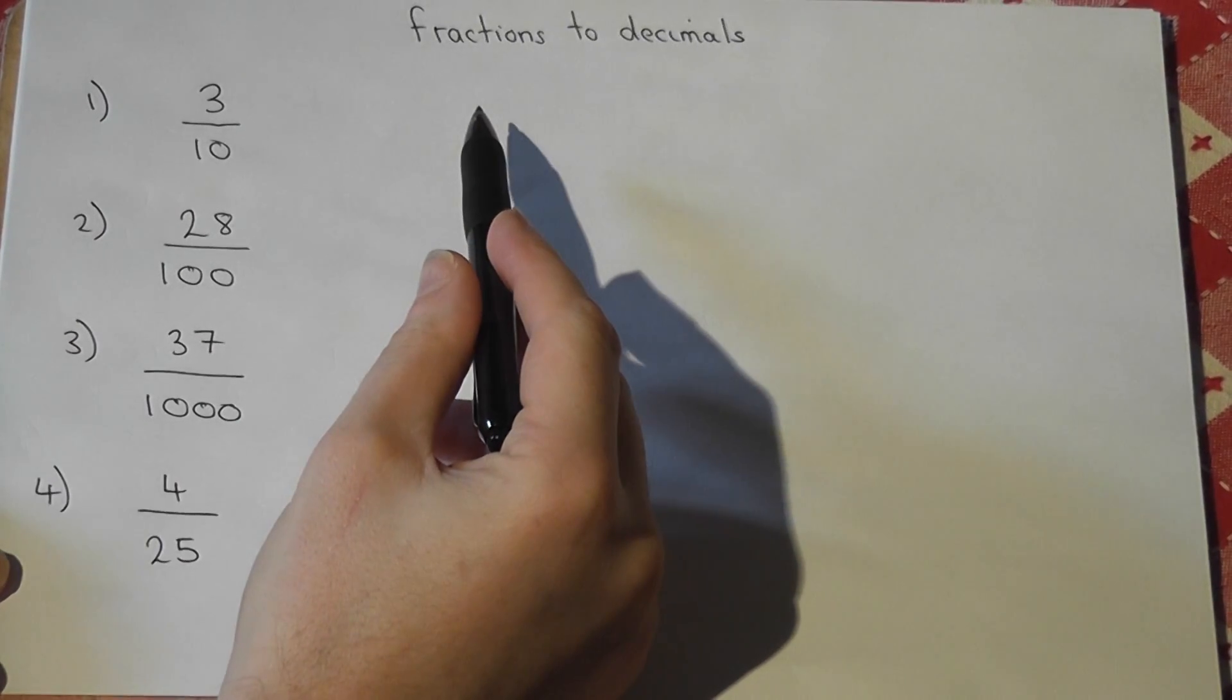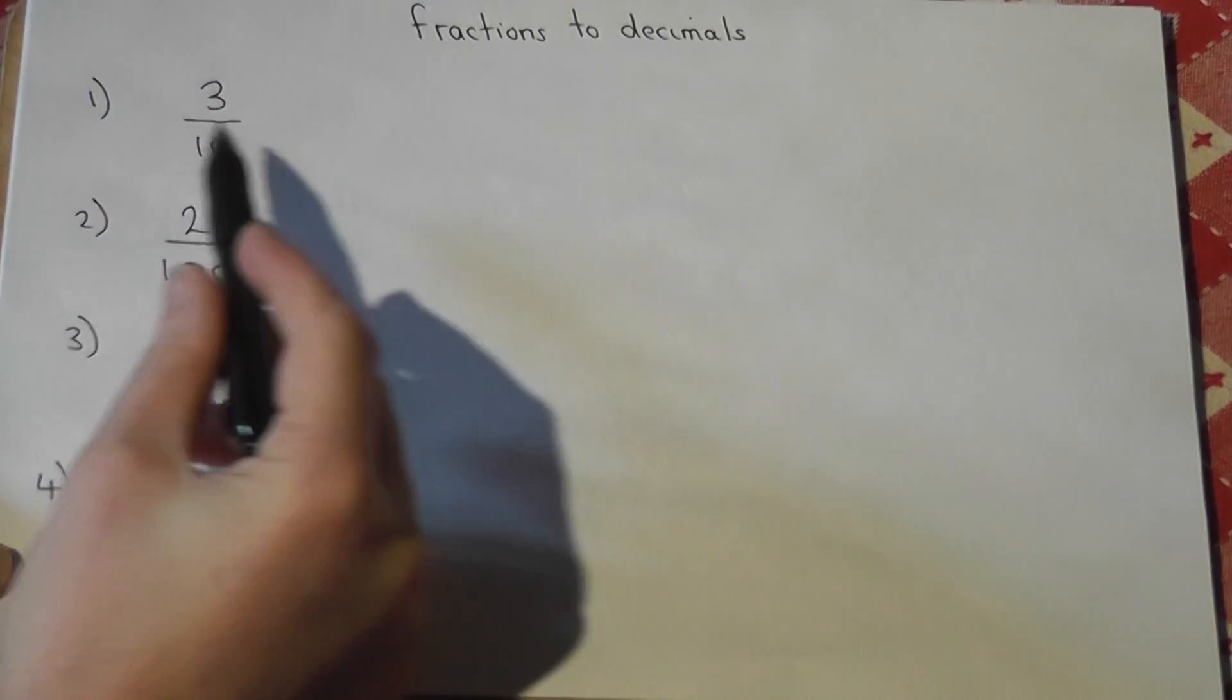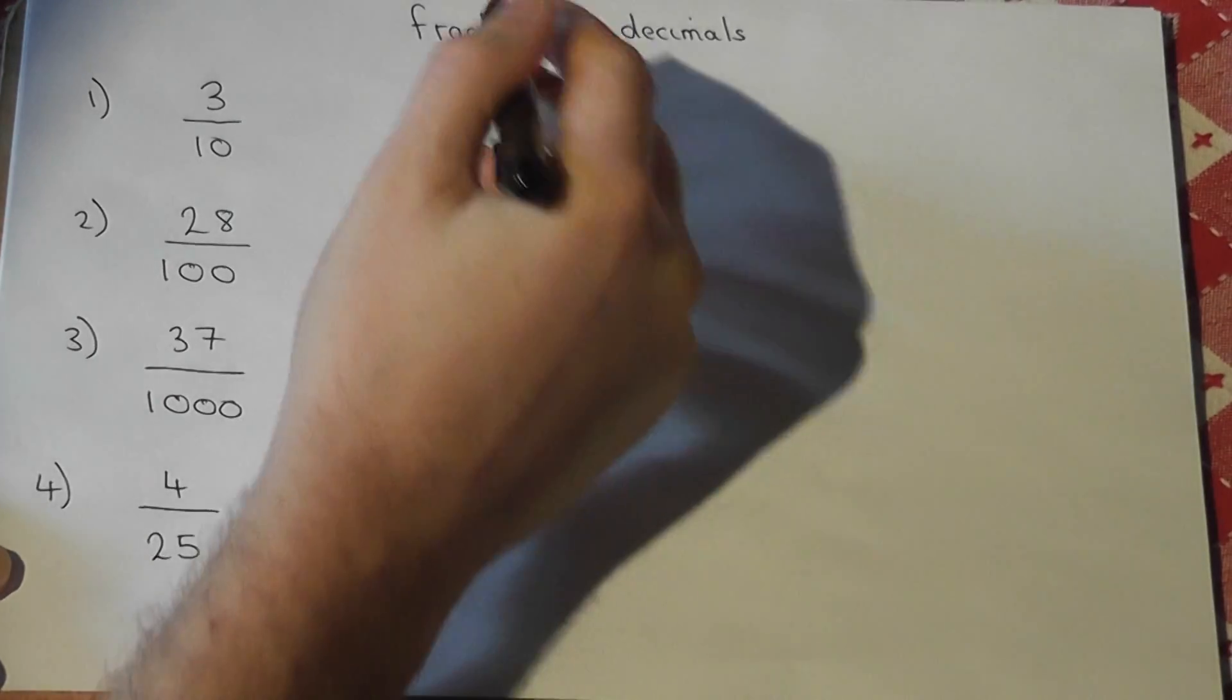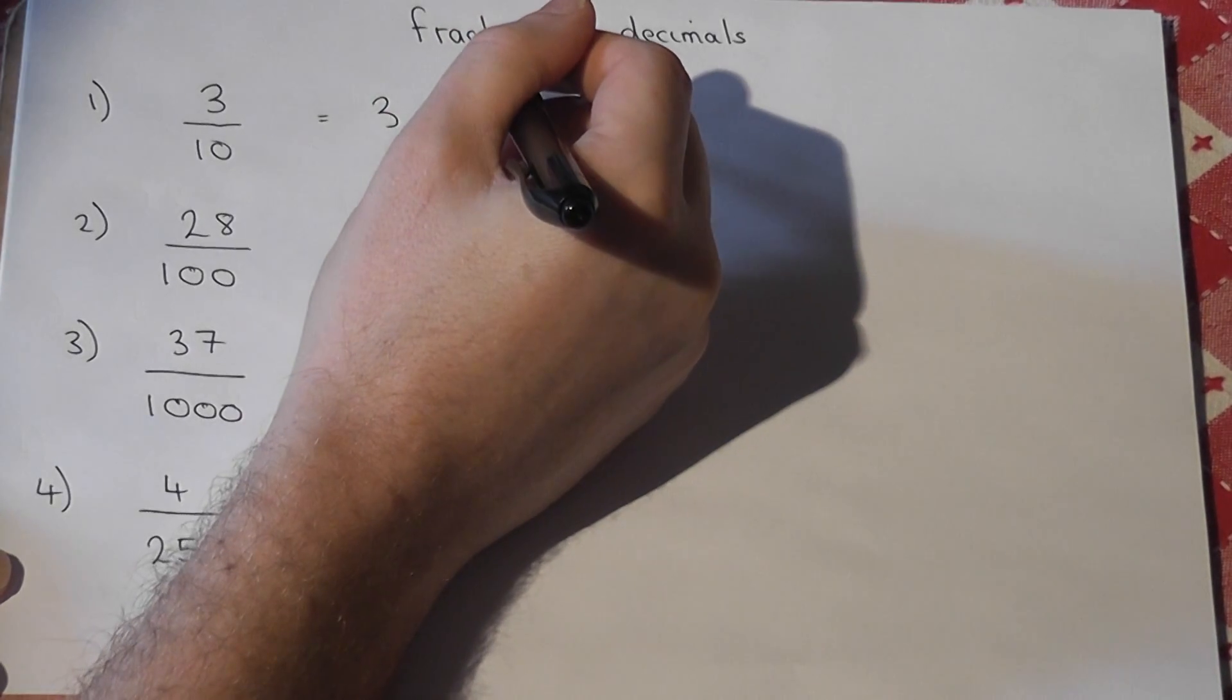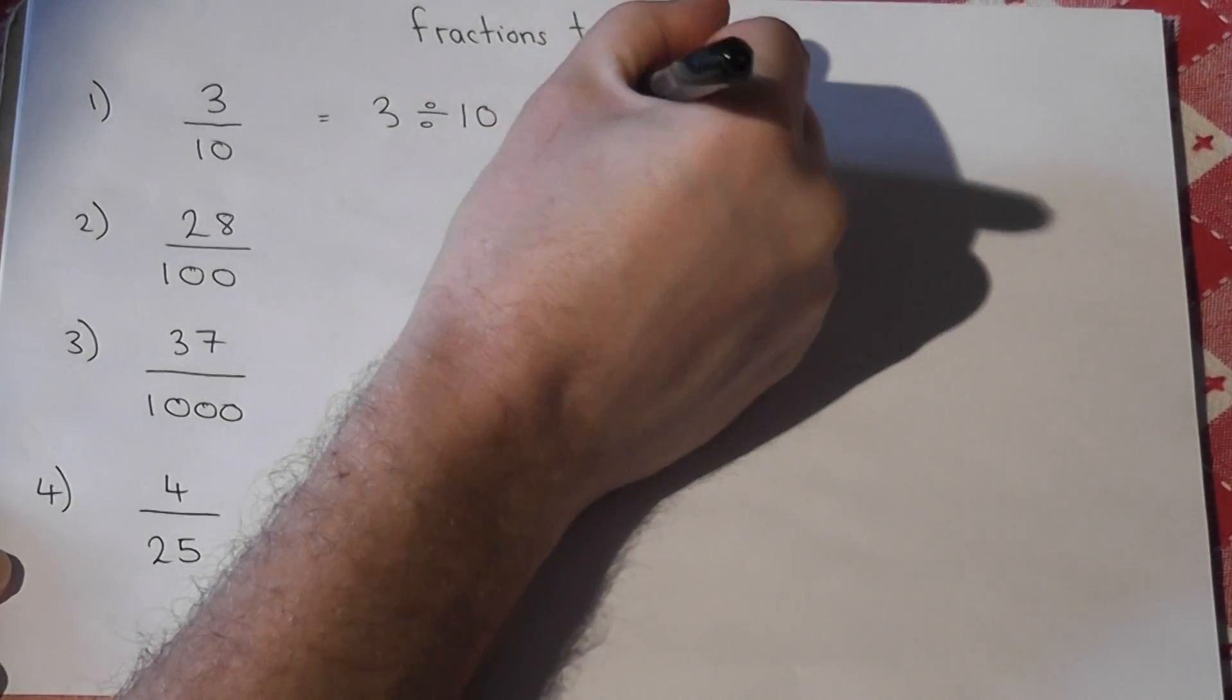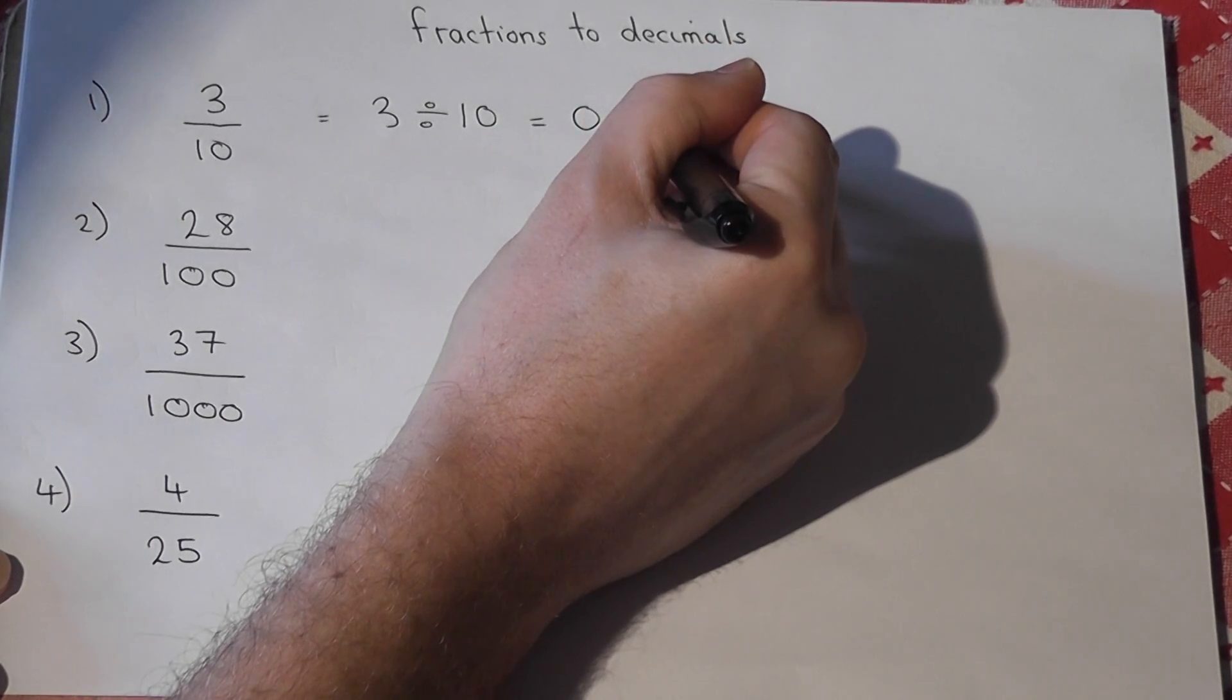When you convert fractions to decimals, you just have to remember that the fraction line just means divide. So 3 tenths just means 3 divided by 10, and it's not hard to divide by tens or hundreds—the number just moves one place to the right. So it becomes 0.3, so rather than 3, it's 0.3.